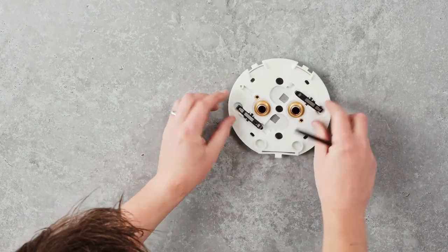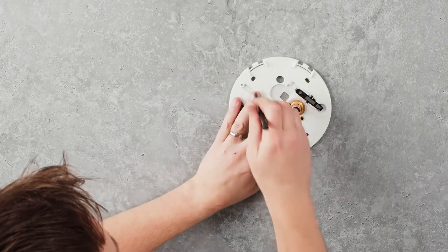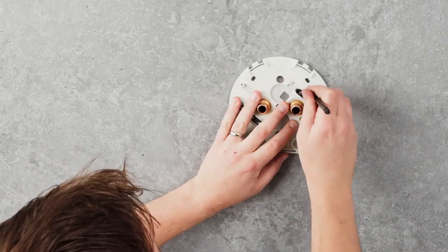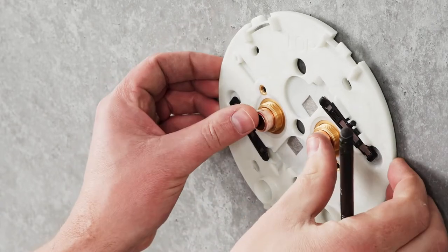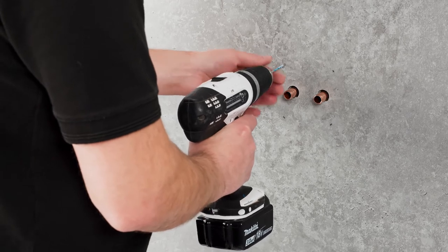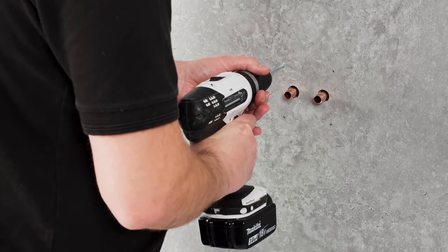The valve backplate can then be offered to the wall and marked for drilling. All four fixing points are required to secure the valve to the wall sufficiently. The wall can then be drilled, taking care to avoid the pipework in the wall cavity.